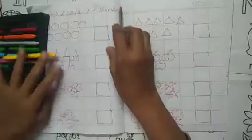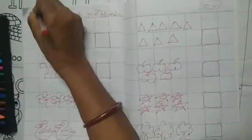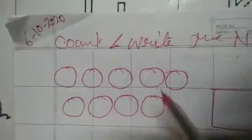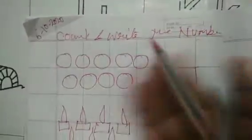Good morning all of you. This is your math period. Today's date is 6, month 10, year 2020. Today is Tuesday. This is math period. Count and write the number. Let's do division work.